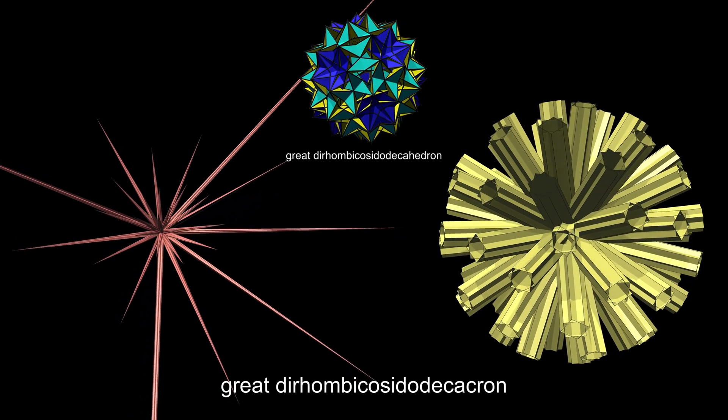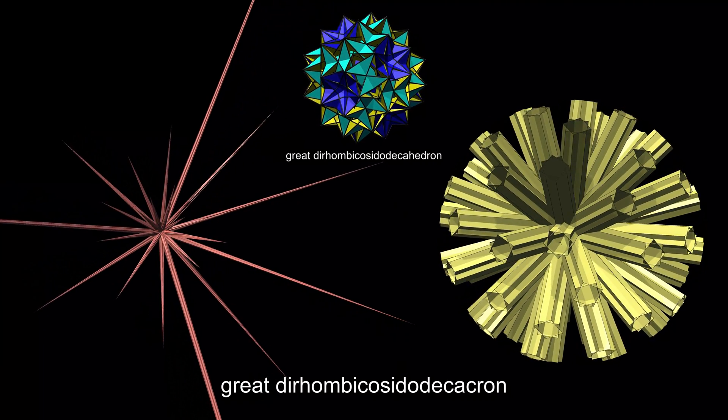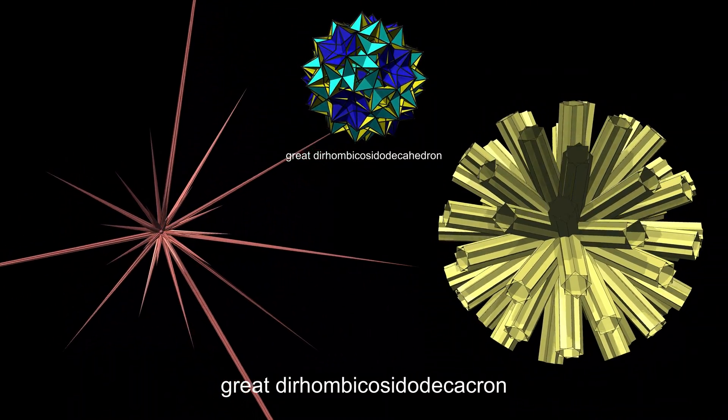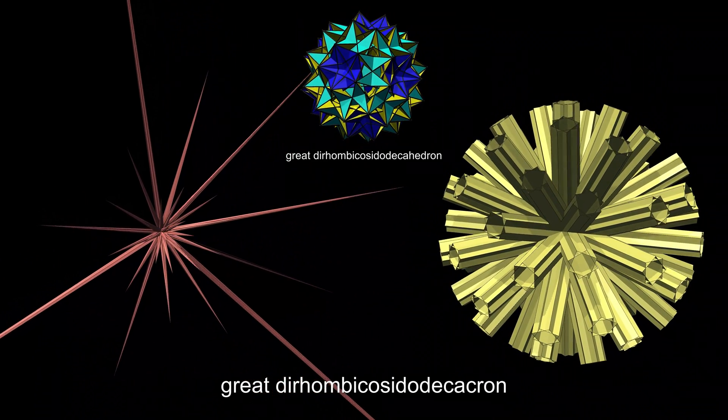The dual of Miller's monster, the great dirhombicosidodecahedron, has no less than 60 square spikes or prisms, that occur in coincident pairs rotated with respect to each other, so they look octogrammic.